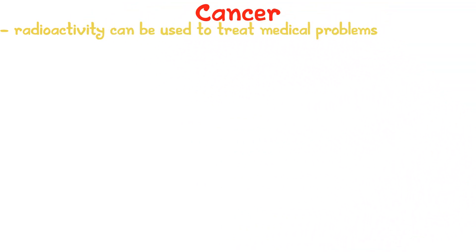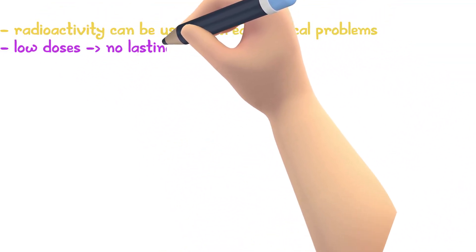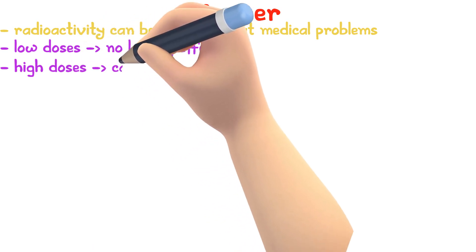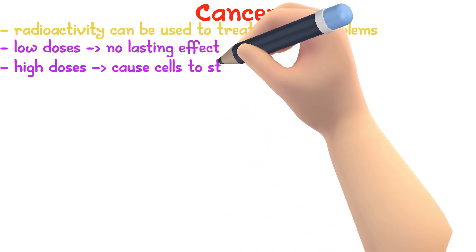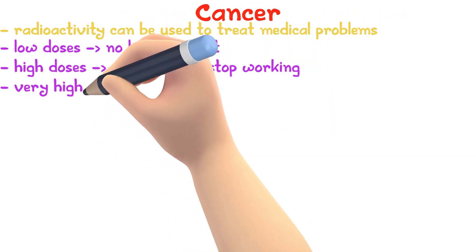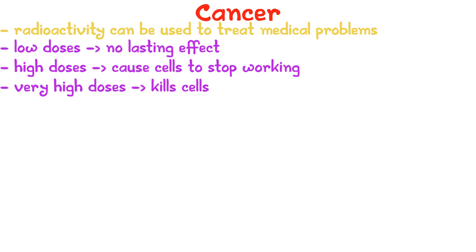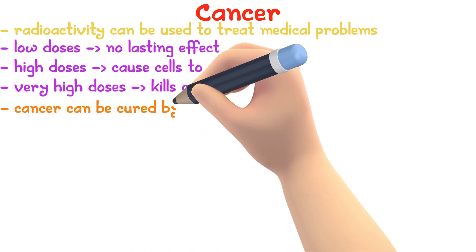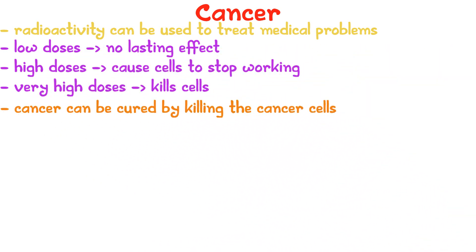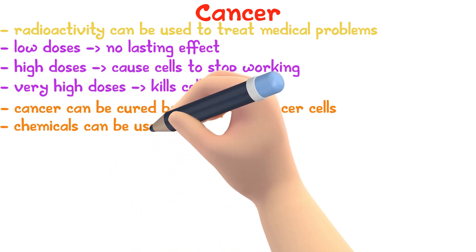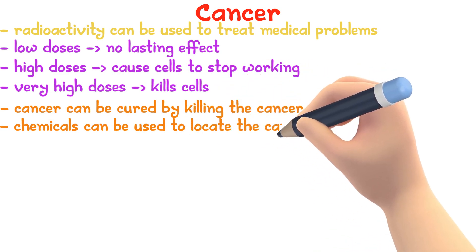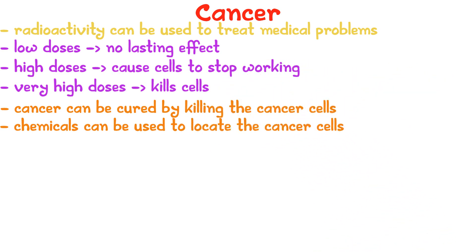Radioactivity is not only used to trace medical problems but to treat them as well. Low doses of radiation have no lasting effect, but higher doses could cause cells to stop working properly, and very high doses can kill cells. Cancer can be cured by killing the cancer cells inside the body using radiation. To prevent this from killing other living cells, chemicals are used to locate only the cancer cells, and then radiation is used to kill them.